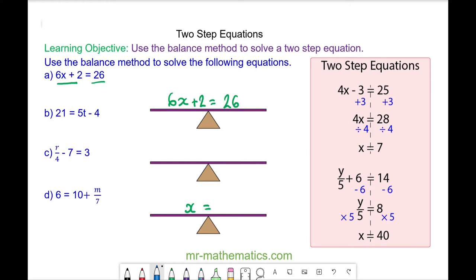We want to move the positive 2 over to the right hand side of our scale. We do this by taking away 2, because 2 take away 2 will make 0, which means we are left with 6x is equal to 26 take away 2, which is 24. And 6x means 6 multiplied by x.